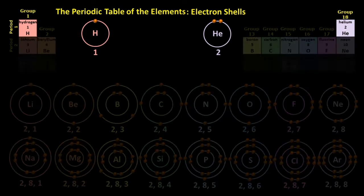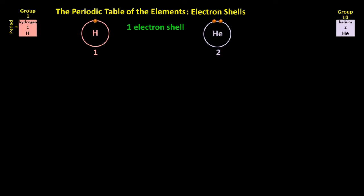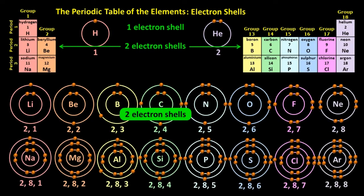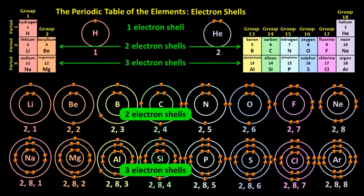Notice how the two elements in period one have only one electron shell. The elements in period two have two electron shells, and the elements in period three have three electron shells. This pattern, in fact, applies to all the periods.